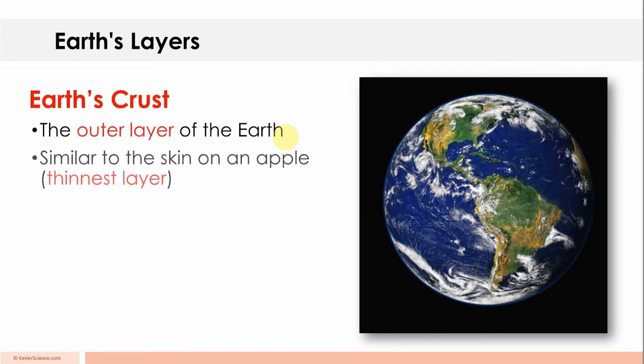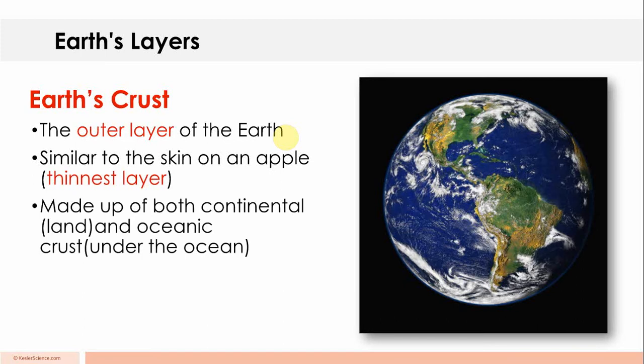Earth's crust is the outer layer of the Earth, similar to the skin on an apple, made up of both continental and oceanic crust, 5 to 50 kilometers thick.